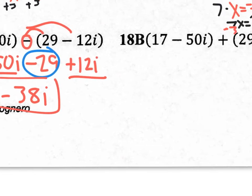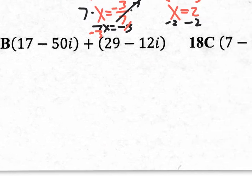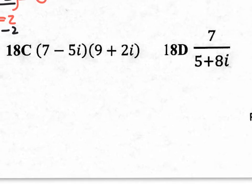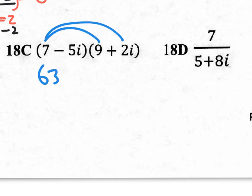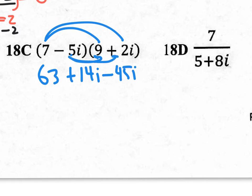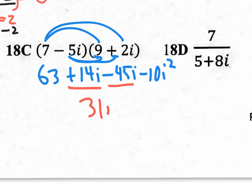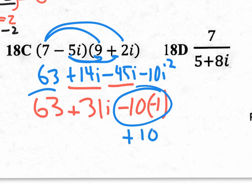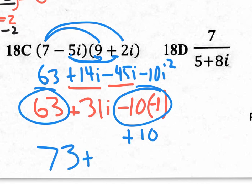Number 18B is just combining like terms — numbers with numbers, I's with I's. For 18C, you get to distribute. 7 times 9 is 63, 7 times 2I is positive 14I, negative 5I times 9 is negative 45I, and negative 5I times positive 2I is negative 10I squared. Combining 14I and negative 45I gives negative 31I. Since I squared equals negative 1, negative 10I squared becomes positive 10, which combines with 63 to give a final answer of 73 plus 31I.